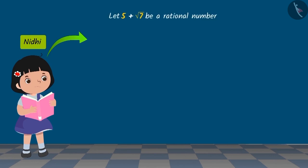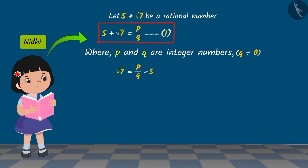Nidhi assumes that 5 plus square root of 7 is a rational number, which is written as P upon Q, where P and Q are integers. On rearranging equation 1, we get square root 7 equals P minus 5Q upon Q.